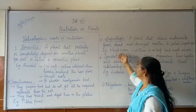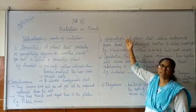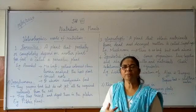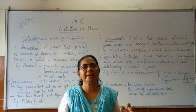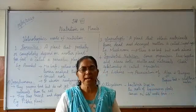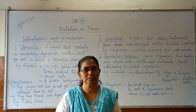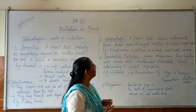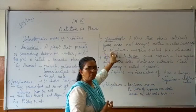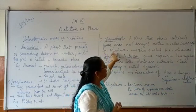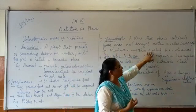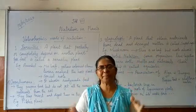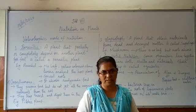Now the third one is the saprotrophic nutrition. What is a saprotroph? A plant that lives on dead and decayed matter and takes nutrients from it. Since they do not have chlorophyll, they cannot prepare food. For example, mushroom. In mushroom, there are no leaves, but the roots absorb nutrients from the dead and decayed matter.